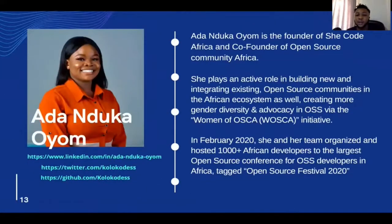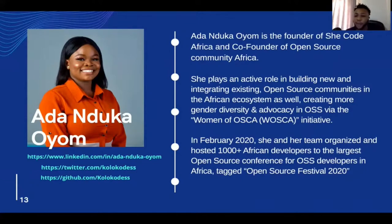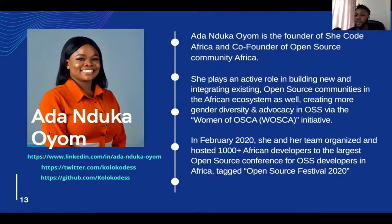Ada Unduka Oyam is the founder of She Code Africa — a non-governmental organization focused on helping girls and women get into coding. She's also the co-founder of Open Source Community Africa alongside Samson Godi. Ada is a developer and program manager at Google on the Google Developer Community program. She's an expert in creating gender diversity and advocacy in OSS via the Women of OSCAR initiative. She helped organize the largest open source conference for OSS developers in Africa — the CAG Open Source Festival 2020.